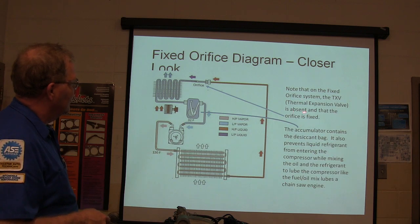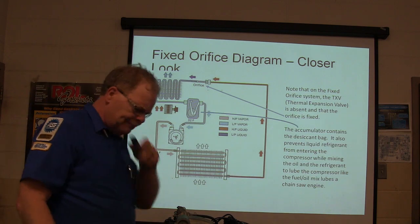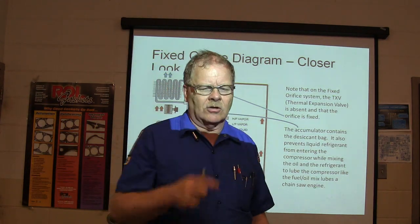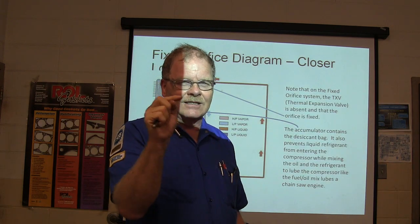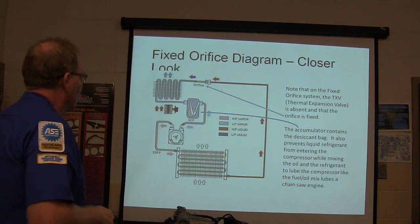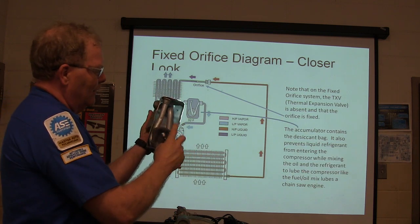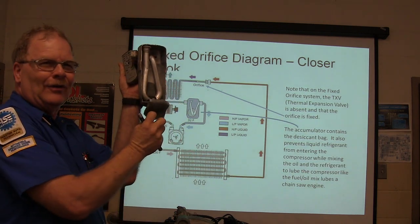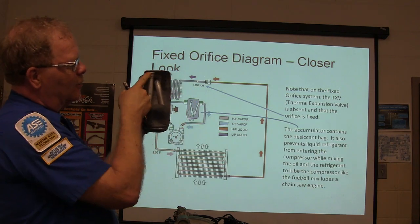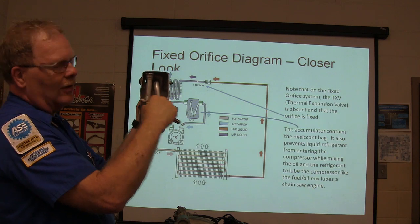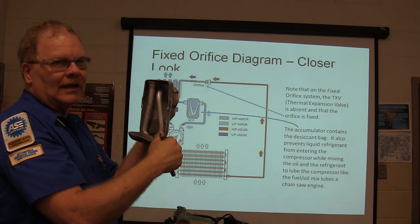The fixed orifice system doesn't have an expansion valve — it's just got this orifice that never changes. The accumulator: you might notice how it's drawn. You can see the filter down around the hole. It gets a little bit of oil and grabs refrigerant and pulls it in. It's pulling vapor because it's about half full of oil and liquid. That oil has refrigerant trapped in it, and it gets pulled in to oil the compressor — like a chainsaw oiling system.